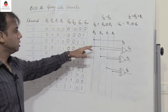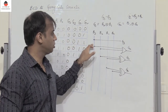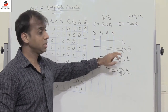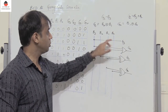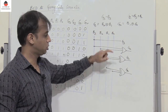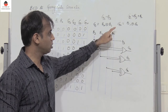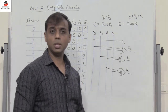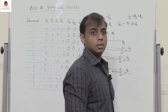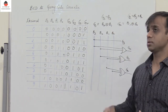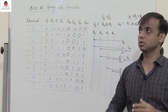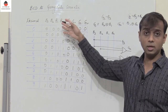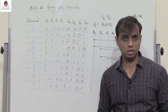Very simple: G3 = B3, G2 = B3 OR B2, G1 = B1 XOR B2, G0 = B1 XOR B0. In the previous lecture we covered BCD to XS3 conversion, and here we have covered BCD to gray code conversion and implemented it using logic gates.